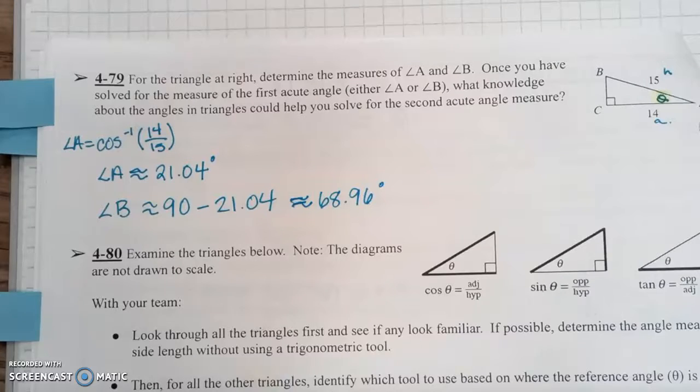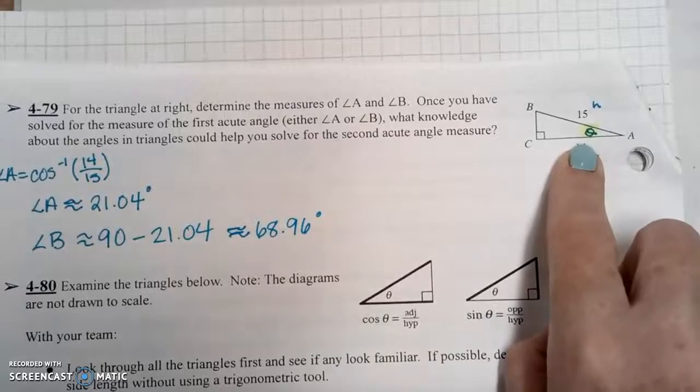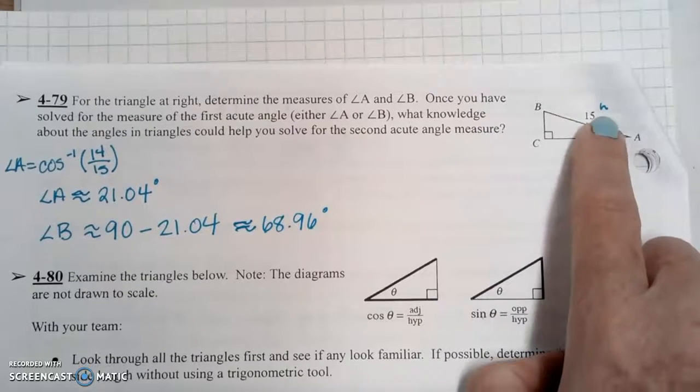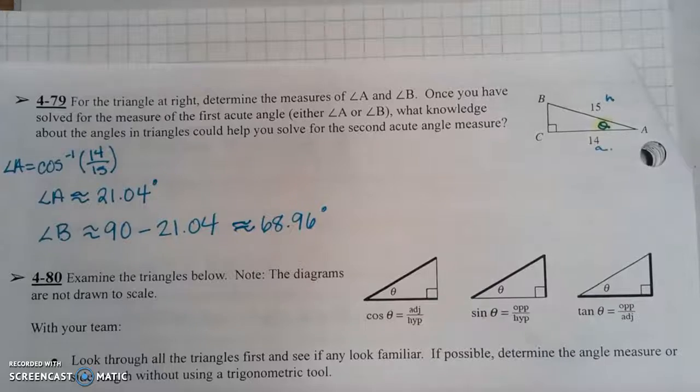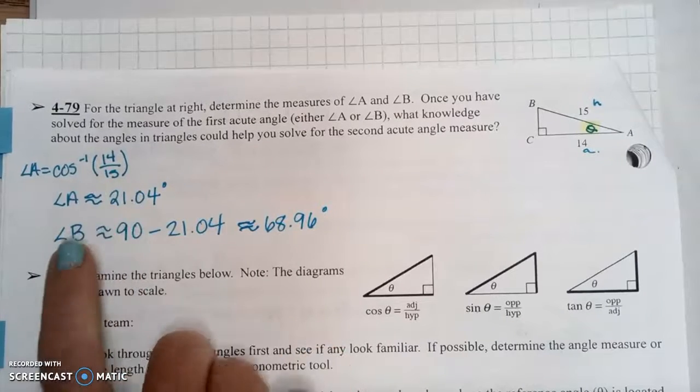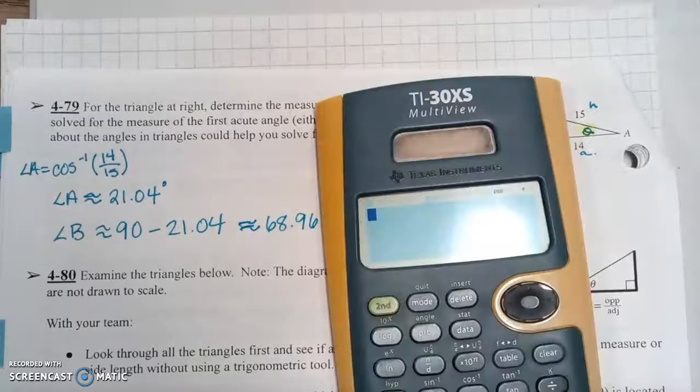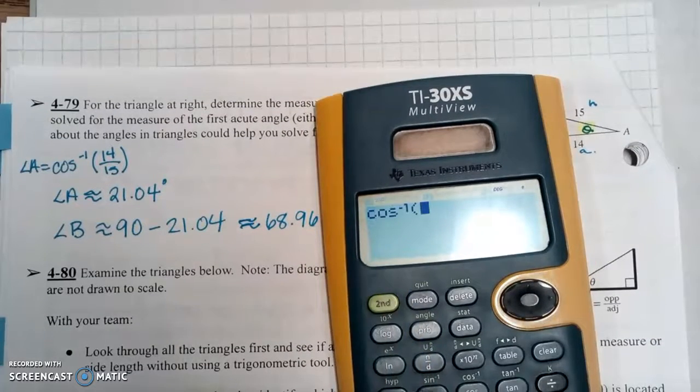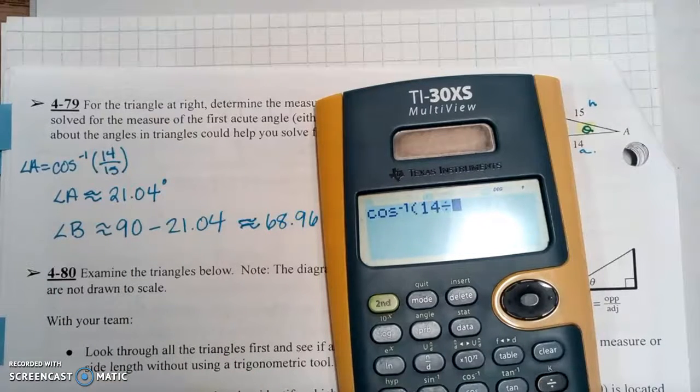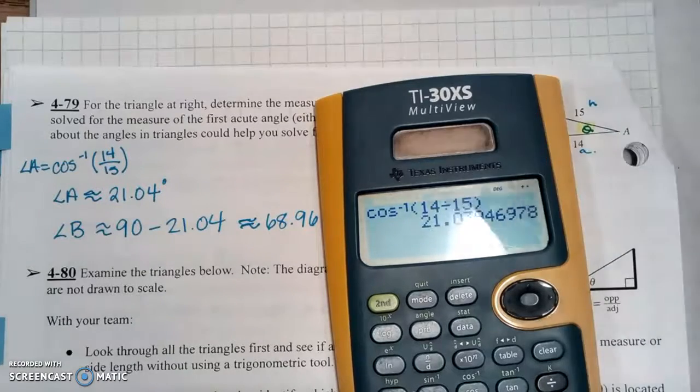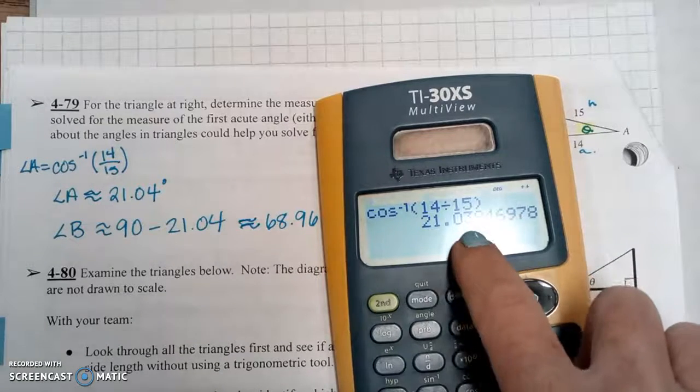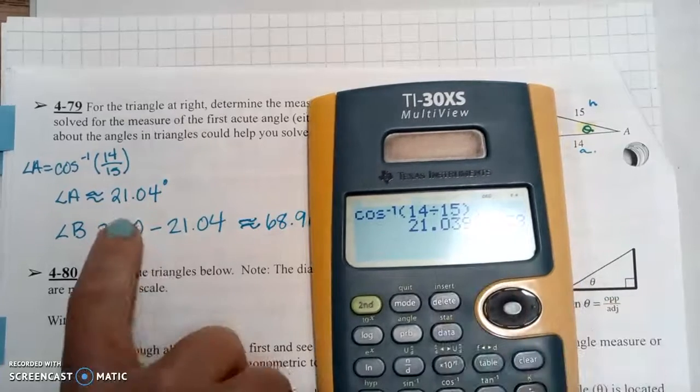So I picked to do angle A first. So A is over here. I called it theta. But you can put any variable there you want. So from there, I know the 14 and the 15, which is adjacent and hypotenuse. So the trig function that uses adjacent and hypotenuse is cosine. So I did the cosine of 14 over 15, but I want to solve for the angle. So I did the inverse cosine. So on this calculator, go second cosine, make sure it has the little inverse negative one up there, and then type in the ratio of 14 to 15. Hit the equal sign. And then we have 21.03, but there's a 9 next to the 3. So we round up to 21.04.